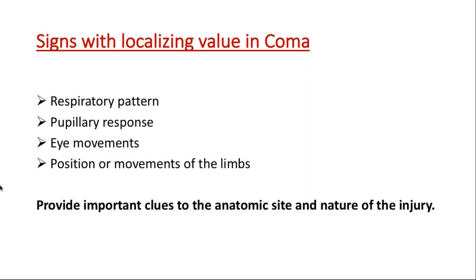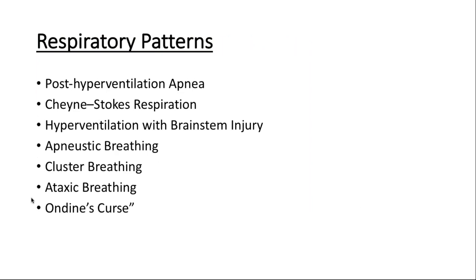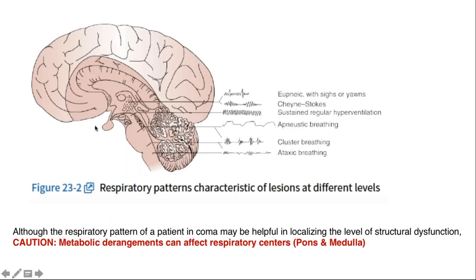Signs of localizing value in coma include different respiratory patterns, brainstem reflexes, and motor assessment. Regarding respiratory patterns, I'll describe them in a rostrocaudal manner — top to bottom. A patient with bi-hemispheric dysfunction may still maintain their airway but show subtle signs like deep yawns and sighs.